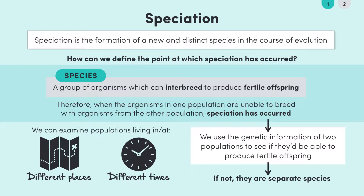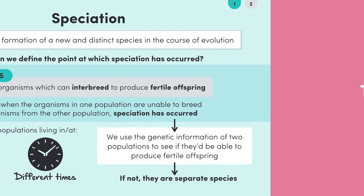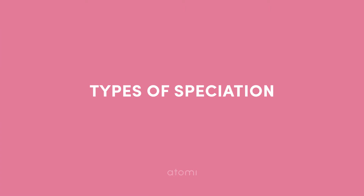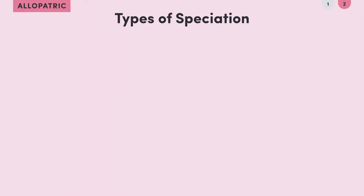Now, that's the general process of speciation. Let's take a closer look at the specific types of speciation you've got to know: allopatric, sympatric and parapatric. The types just differ depending on how the individuals are isolated.